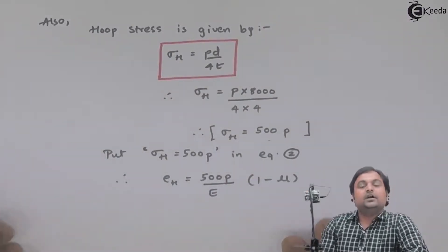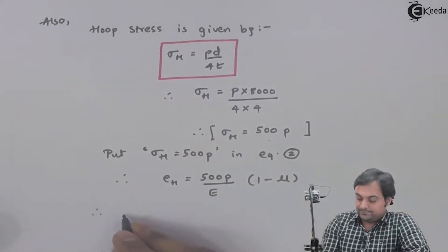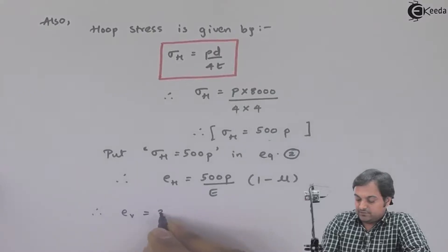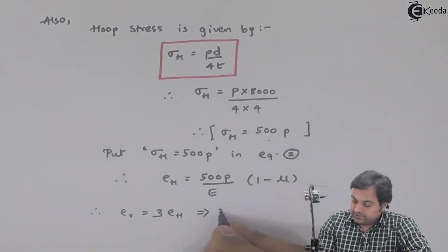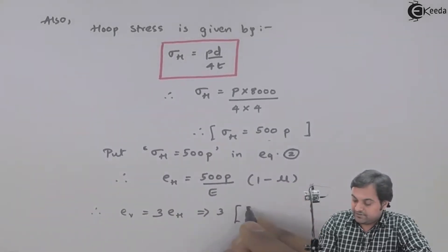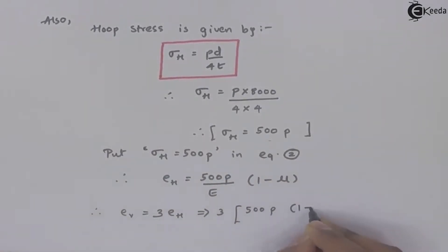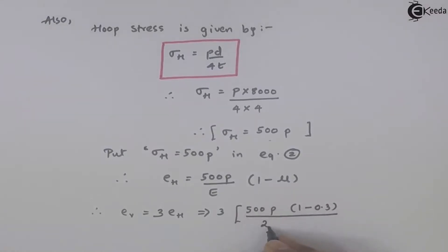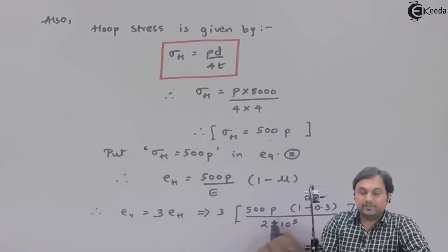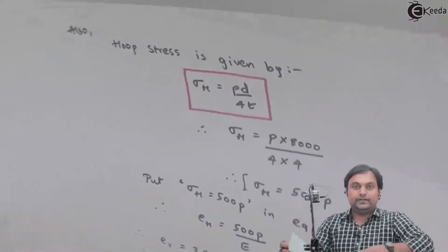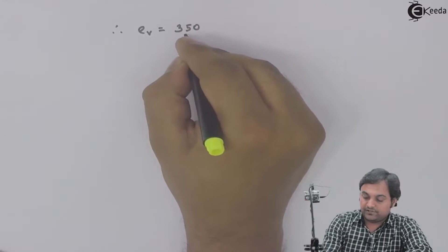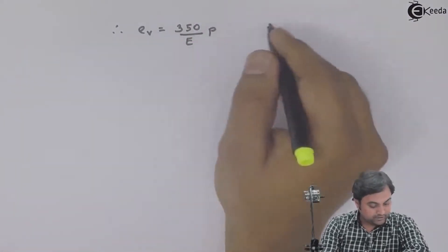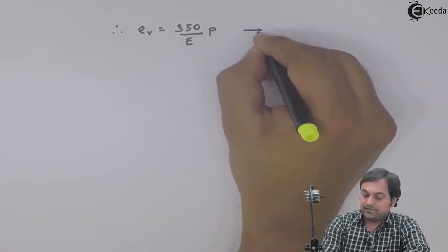Therefore volumetric strain eᵥ = 3 × hoop strain = 3 × 500P × (1 − μ) / E. With μ = 0.3 and Young's modulus E = 2×10⁵, calculating all terms gives volumetric strain = 350P / E. I will keep this as Equation 3.